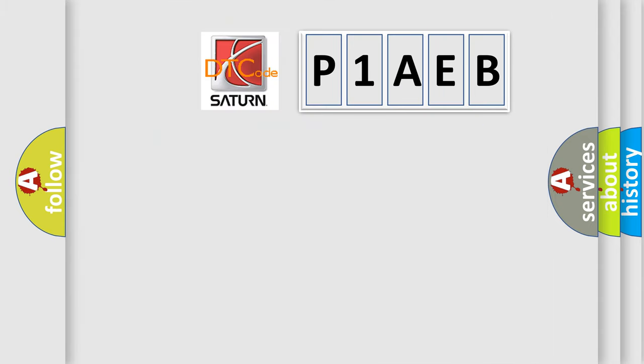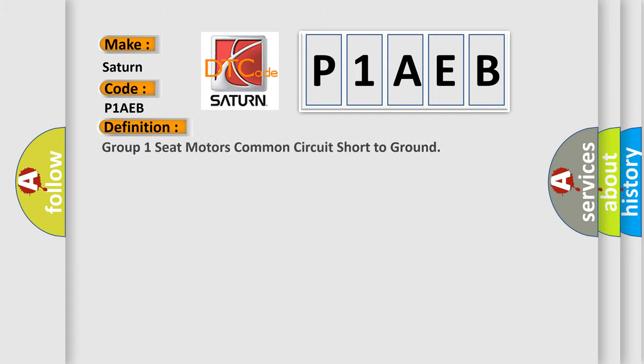So, what does the diagnostic trouble code P1AEB interpret specifically for Saturn car manufacturers? The basic definition is group one seat motors common circuit short to ground. And now this is a short description of this DTC code.